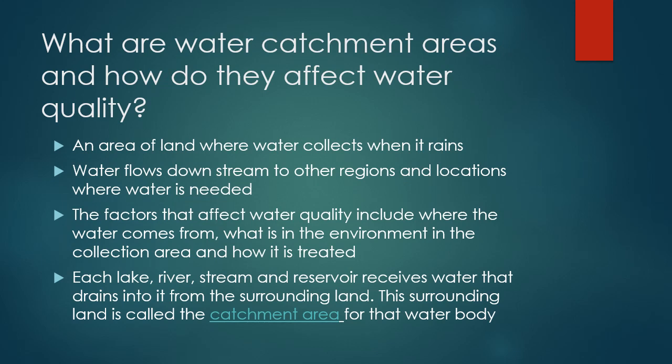On this slide, I will be covering what water catchment areas are and how they affect water quality. A water catchment area is an area of land where water collects when it rains, or simply where water can be stored. Water flows downstream to other regions and locations where water is needed. It's not always the case that the water flows downstream — it could stay there, evaporate, get collected, and evaporate again.